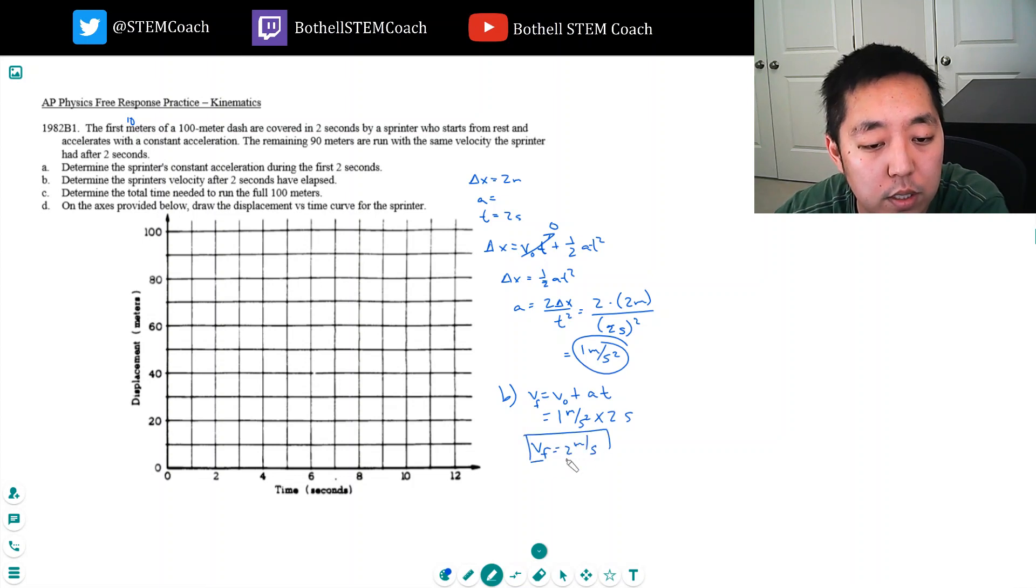Part C: Determine the total time needed to run the full 100 meters. Okay, so he takes two seconds to travel that first 10 meters, then the remaining 90 meters he does at two meters per second.